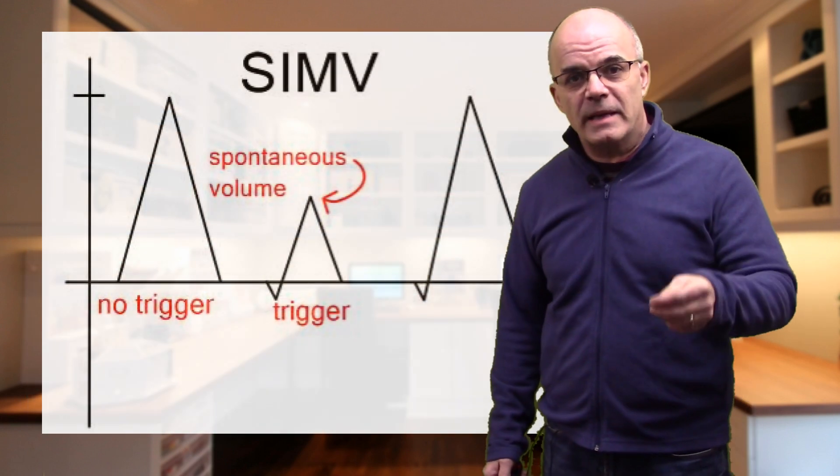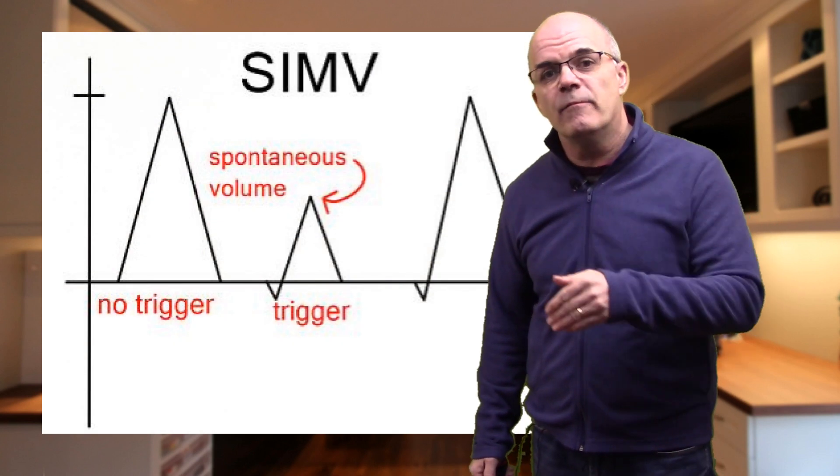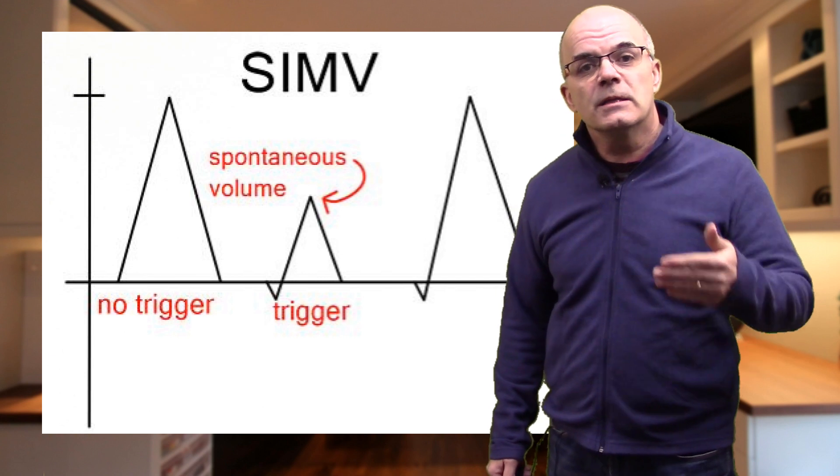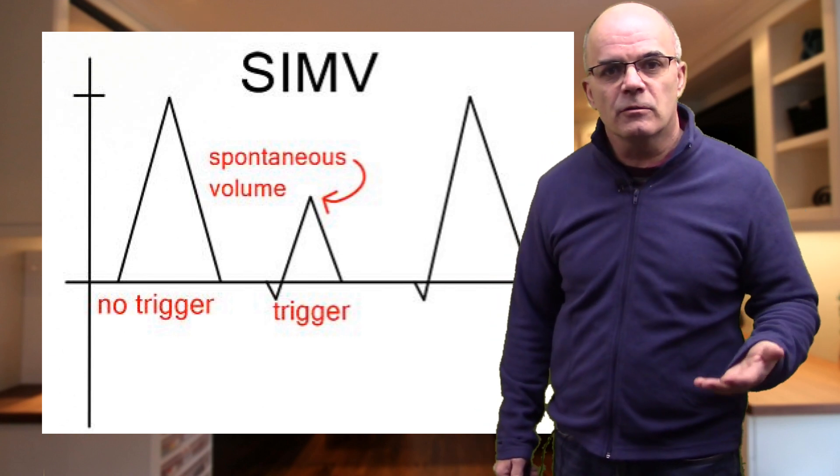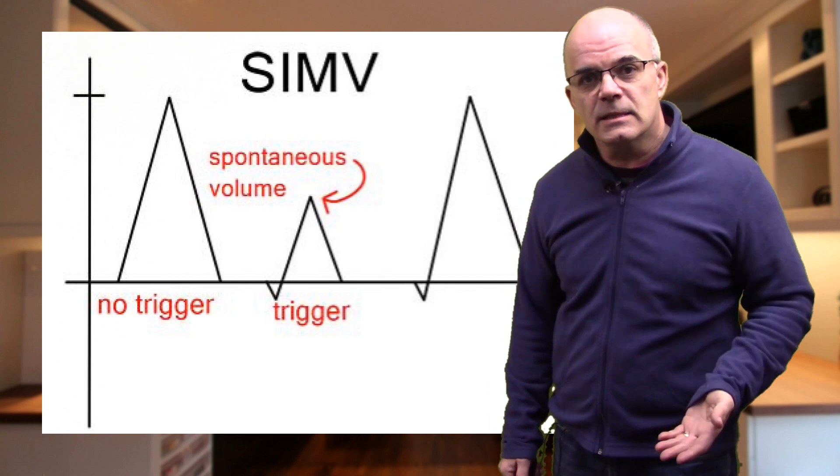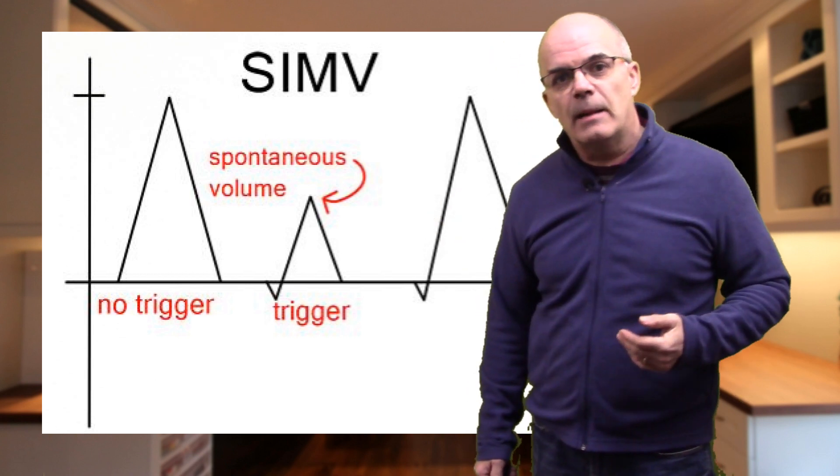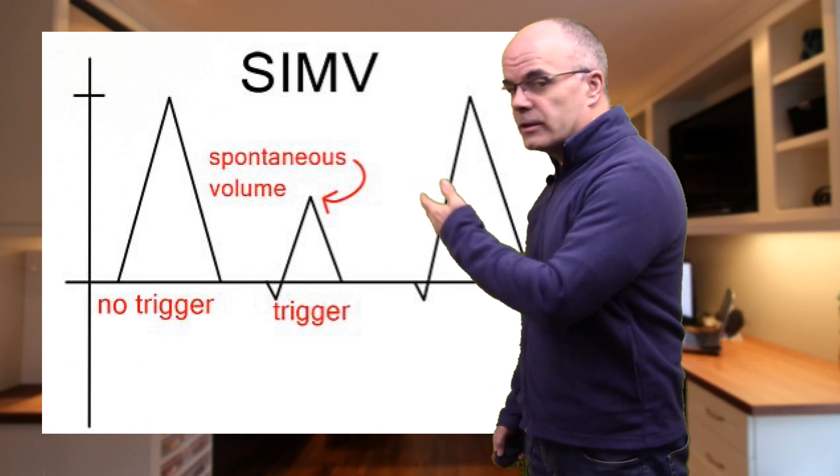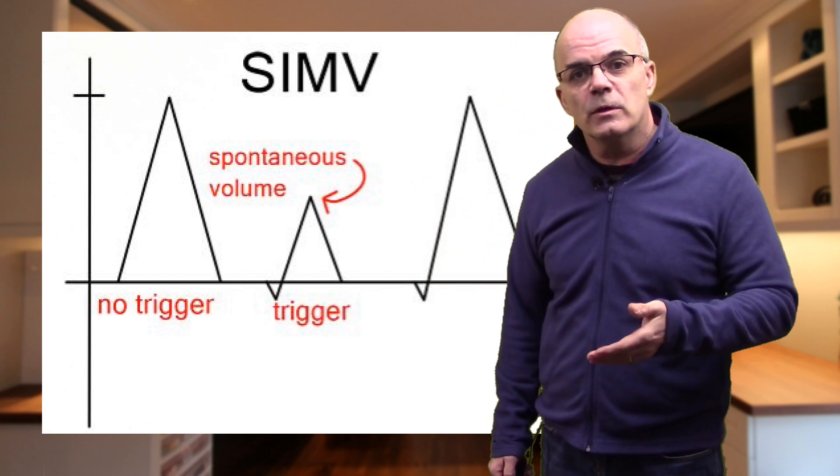Synchronized intermittent mandatory ventilation, or SIMV, almost always combined with pressure support, is a mix of mandatory breaths, some of which are synchronized with support, and assisted breaths. You can see in this example that there is one breath which is a mandatory one, and then a triggered breath which has a much smaller tidal volume.